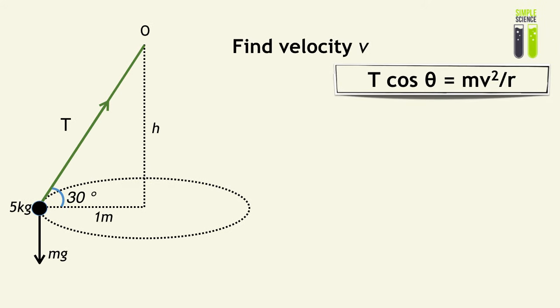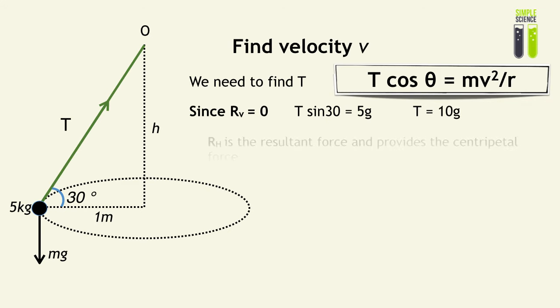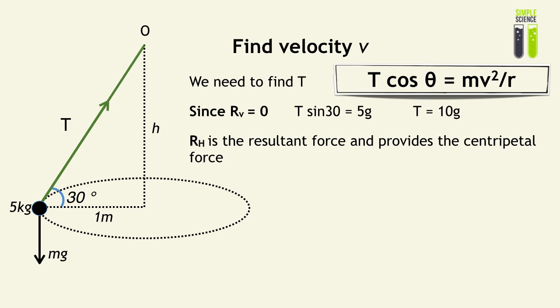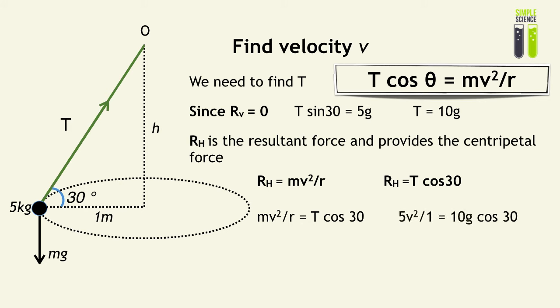A common question is to find the linear velocity of the motion. We know T cos θ = mv²/r. First, by resolving vertically, T sin θ = 5g, which simplifies to T = 10g. Since the horizontal component provides centripetal force, T cos 30 = mv²/r. Looking at the trigonometric diagram, r = 10 cos 30. We can then simplify to find v = 4.12 meters per second.